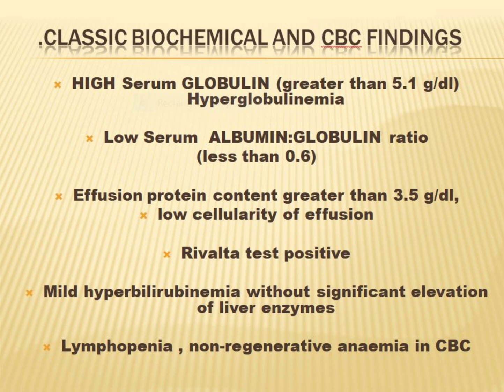FIP is mostly a disease of young purebred cats that are especially kept in multi-cat situations and indoors. Stress plays a major factor in the onset of the disease. Also, purebred cats lack what we call immune hybrid vigor, and a typical indoor cat carries more viral load than outdoor cats.